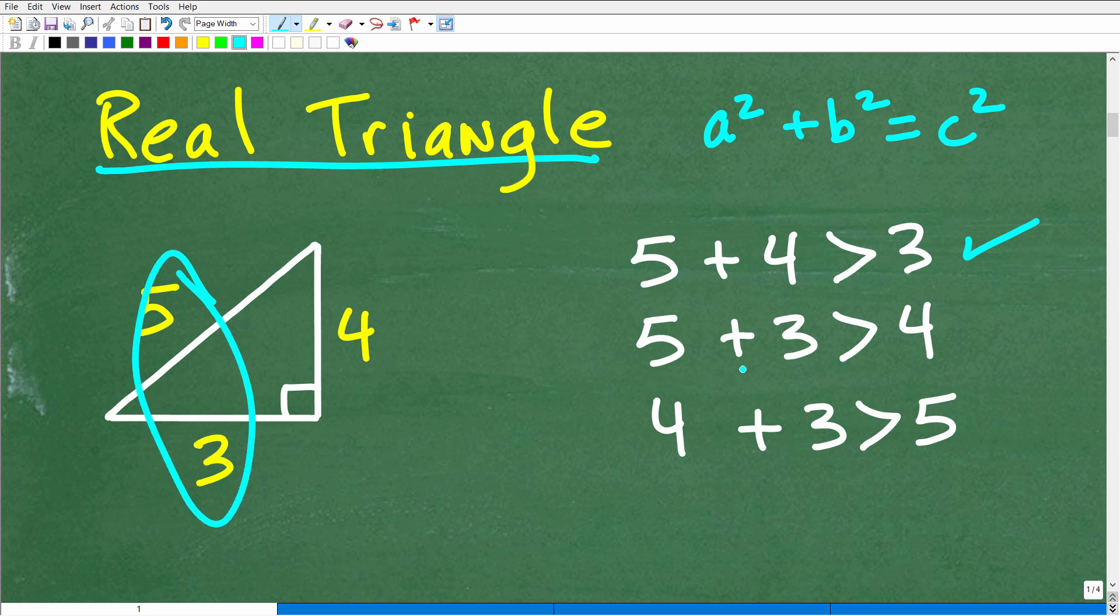Let's take another combination here, so we got 5 and 3. Is 5 plus 3 greater than 4? Yep, that makes sense because 5 plus 3 is 8, that's greater than 4. And then let's do 4 and 3. Is this greater than 5? Well, 4 plus 3 is 7, that's greater than 5. So if you have a real triangle, you'll always be able to have these properties in place. This is basically an illustration of the triangle inequality.